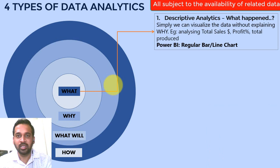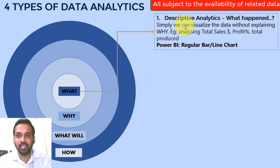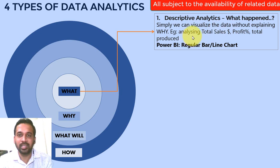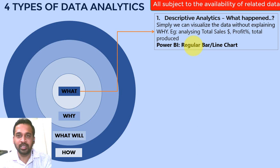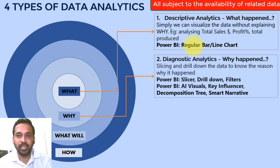The first one is descriptive analytics — what happened. It is simply visualizing the data without explaining why. For example, analyzing the total sales, total profit, or total quantity produced, which is available in Power BI as a regular bar chart or line chart. This is the first stage of data analytics.